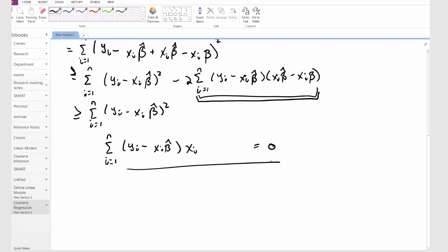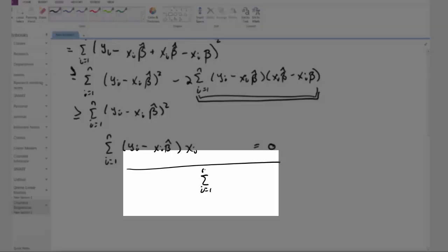Solving this equation for beta hat yields the solution summation i equal 1 to n, yi xi divided by summation xi squared, i equal 1 to n. So that yields our beta hat for regression through the origin.